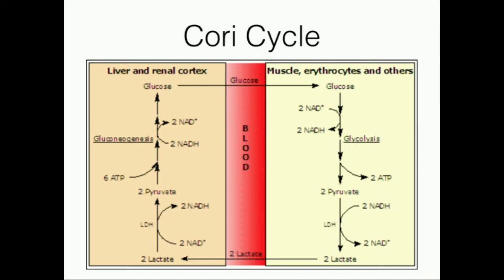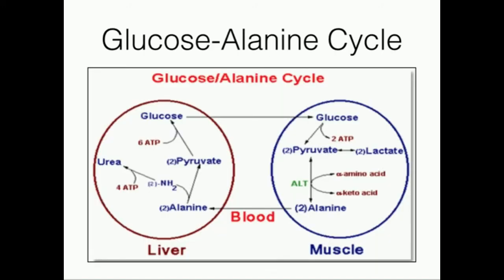When we looked at the Cori cycle, here's the key: glucose got converted to pyruvate, but it was the lactate that was dumped out and used by the liver to make glucose. In the glucose-alanine cycle, glucose gets converted to pyruvate through glycolysis, but it's not lactate that gets used by the liver. Instead, pyruvate first gets converted to alanine, the alanine is dumped out and taken up by the liver, converted back to pyruvate, and then back to glucose, and the cycle repeats.